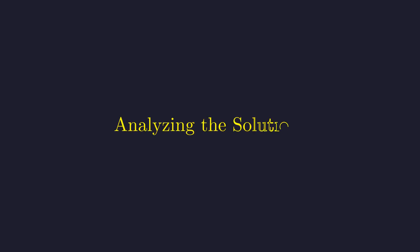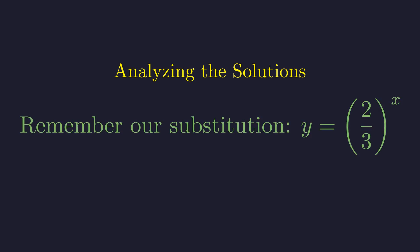We have two potential values for y, but we need to determine which one is valid in the context of our original equation. Let's analyze them carefully. Let's not lose sight of what y represents. We defined y as 2 over 3 raised to the power of x. This is crucial for understanding which solution makes sense in our original context. This substitution is the key to interpreting our solutions.